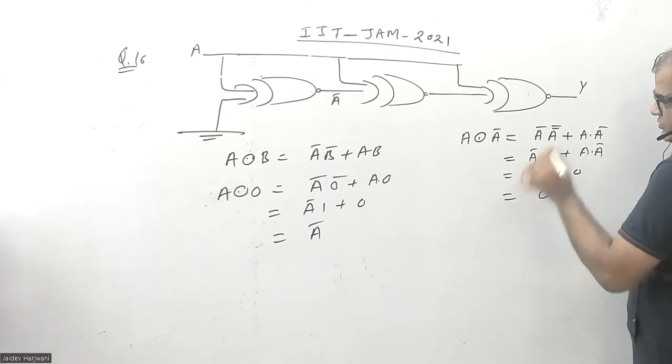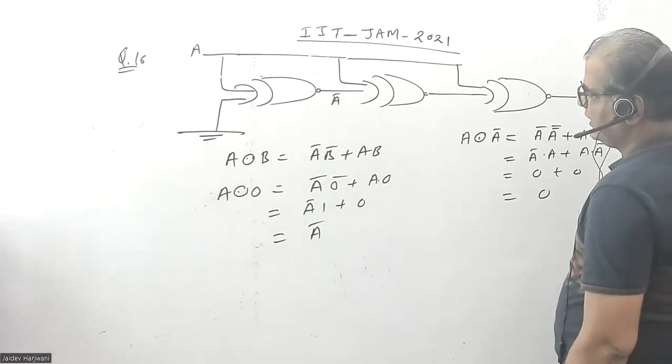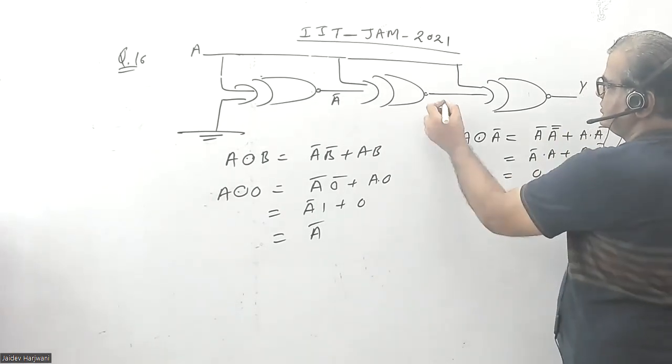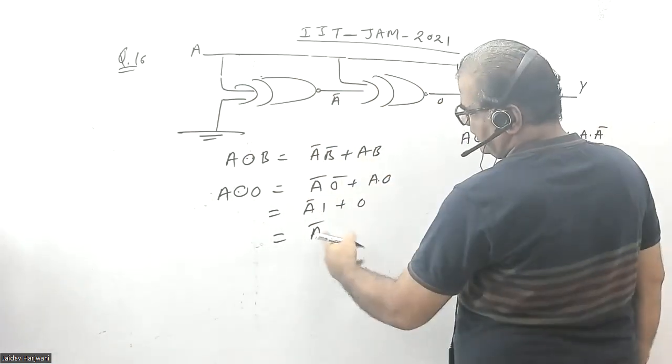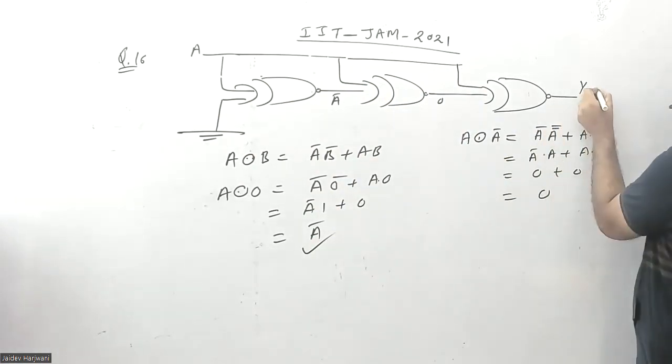Again, this is 0 and this is combined with A. If you do 0 XNOR A, you'll get A bar. So this output will be A bar.